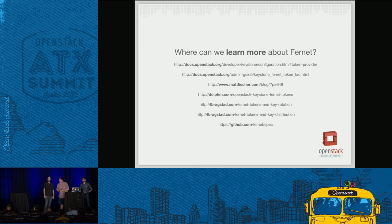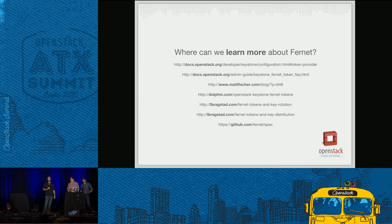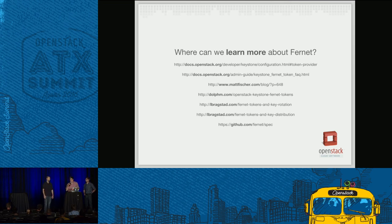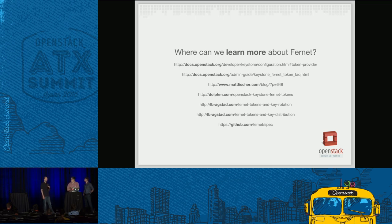Question: I keep hearing informally that Fernet is not quite ready — there are some missing elements for production use. Can you speak to that? Answer: Well, Matt would disagree with you. The road to getting it default is probably the biggest blocker — Tempest makes some assumptions about what it can do with tokens, and it's been a matter of changing Tempest assumptions or increasing timestamp precision in Fernet to avoid race conditions in aggressive testing. We haven't had any major issues with it. Getting rid of database replication stuff was a win for us. We're also using it in Rackspace public and private cloud — definitely production ready.